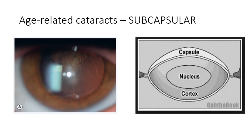Subcapsular cataracts occur in the capsule and they can be divided by anterior and posterior location. An anterior subcapsular cataract lies directly under the lens capsule, while the posterior subcapsular cataract lies just in front of the posterior capsule.